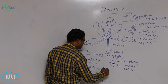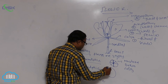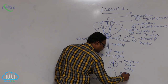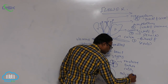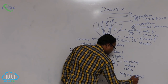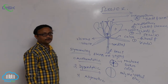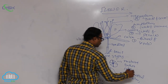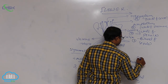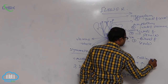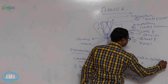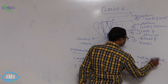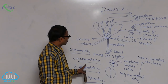A zygomorphic flower can be divided into two equal parts by only one vertical direction. Examples of zygomorphic flowers include Cassia, Gulmohar, pea, and bean.